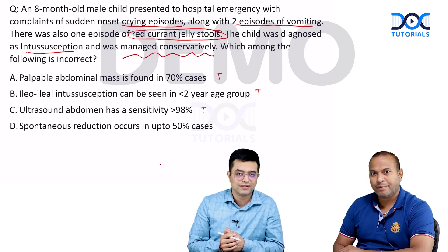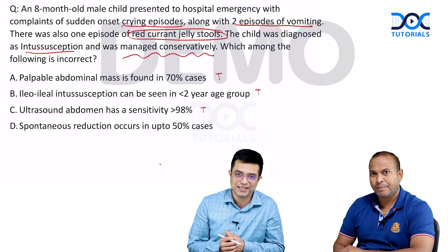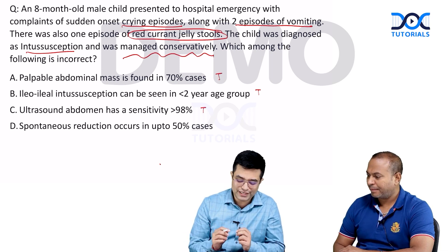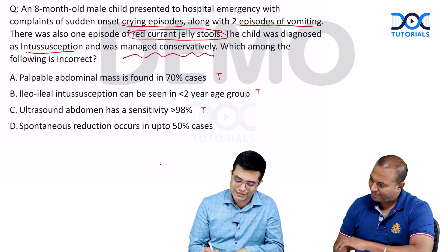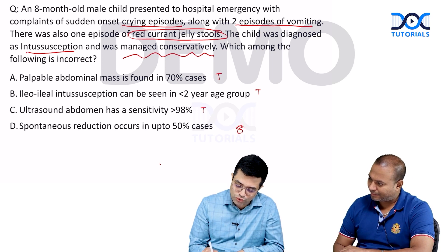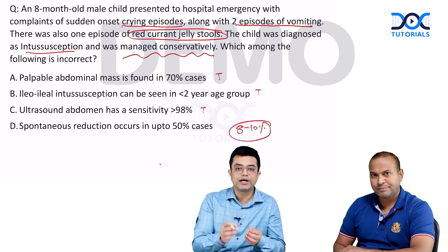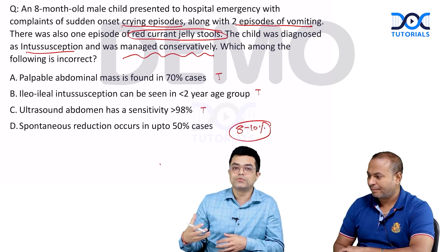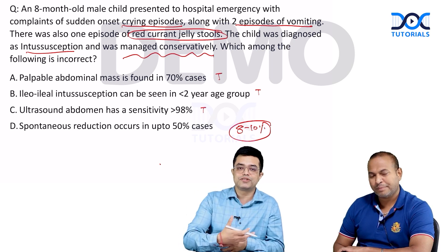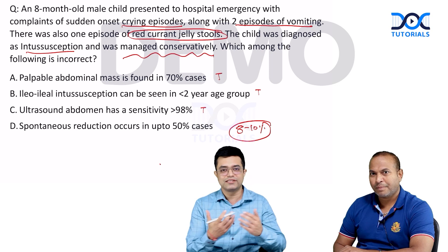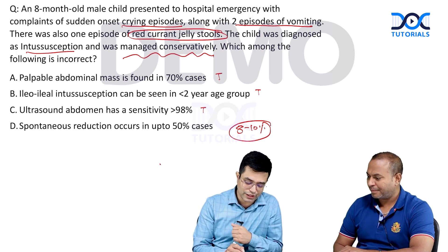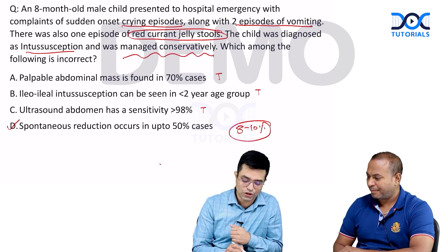What we are left with is option D, which by exclusion is the answer of choice. Spontaneous reduction, according to Nelson, is seen in only 8% to 10% of cases. The remaining will require some degree of management — whether surgical or non-surgical, which will be discussed further. So the answer to this question is option D.